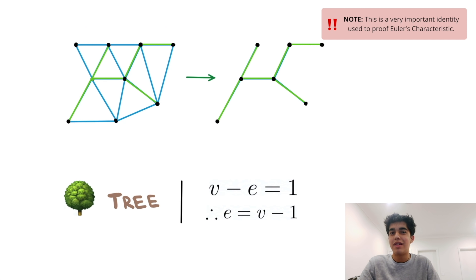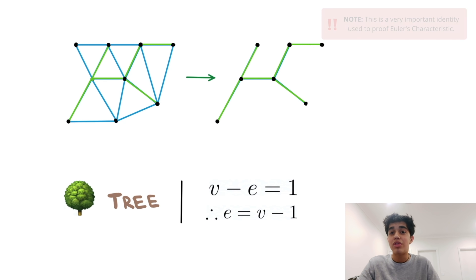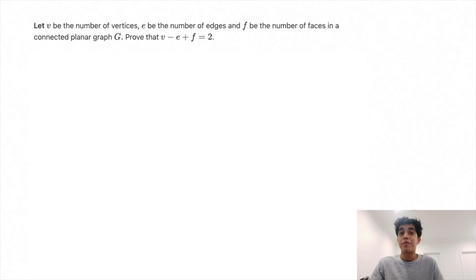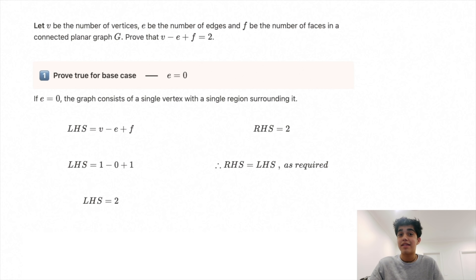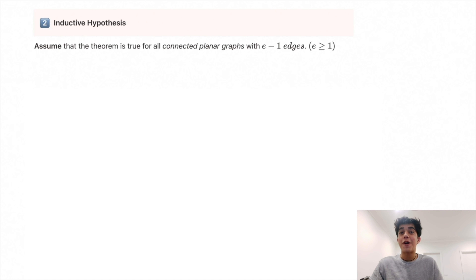To prove Euler's characteristic, let v be the number of vertices, e be the number of edges, and f be the number of faces in a planar graph g. Step one — the base case: when edges equals zero, the graph consists of a single vertex with a single region surrounding it, so Euler's characteristic becomes one minus zero plus one, which equals two. The formula holds for the base case.